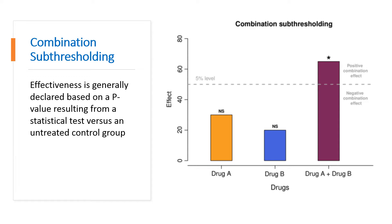The application of this simple approach is common. However, effectiveness declared based on a threshold does not necessarily imply a convincing difference between the effect of the drug combination and the effects of its individual components. Consider a scenario in which the drug combination barely reaches significance and its individual components narrowly fail to reach significance. Although these effects lie on opposite sides of 0.05, the difference between significant and not significant is not itself necessarily significant, and one cannot be convinced of a positive improvement in effect by the drug combination compared to the drugs taken individually.